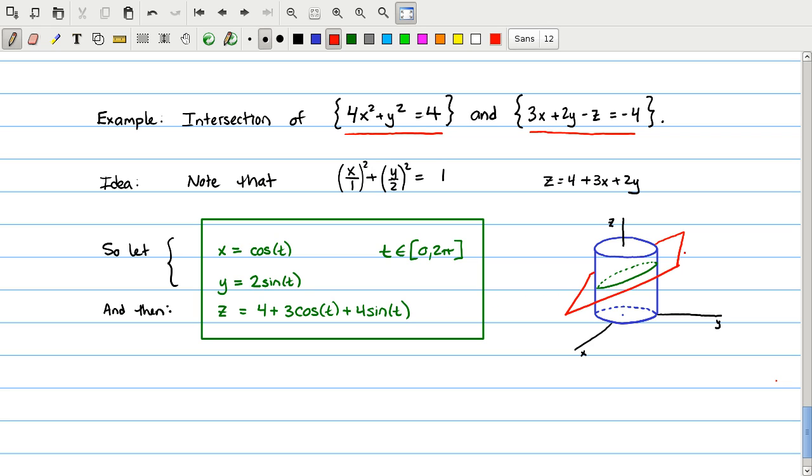And if we sketch that, here we have the cylinder, here I've tried to sketch the plane, and the curve will be here in green, the intersection of those two surfaces, here now in parametric form, suitable for us to do other math on it in a future lesson.